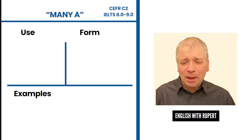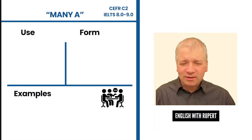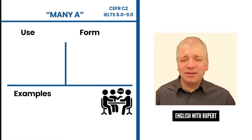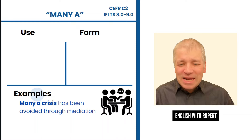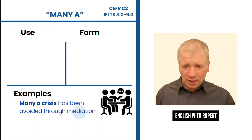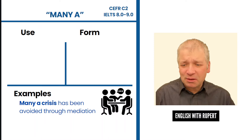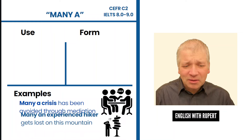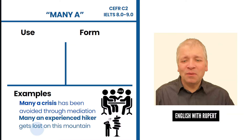First of all, a phrase called 'many a.' Here are some people who are discussing problems, and by discussing together they can avoid them. This is what people say about such situations: 'Many a crisis has been avoided through mediation' — mediation being discussions trying to overcome problems. Another example: many an experienced hiker gets lost on this mountain.